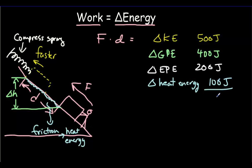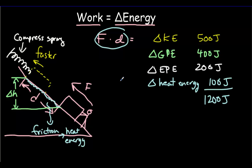If those are the only transformations that occur and we add all of that up — 500 + 400 + 200 + 100 — that adds up to 1,200 joules. Then the work done by this force would have to be 1,200 joules. So we can keep track of where the energy is going; we can do some bookkeeping, and that allows us to do all kinds of neat calculations.